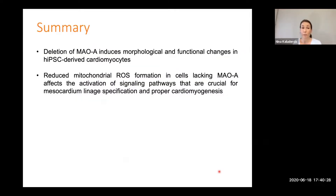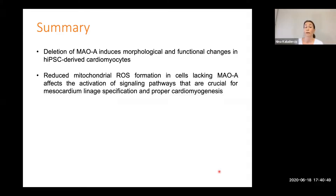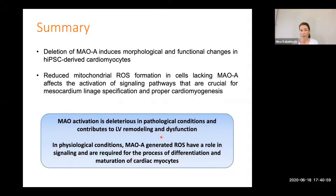In summary, deletion of MAOA induces morphological and functional changes in IPS-derived cardiac myocytes, occurring early during differentiation — between days two and four. It appears that ROS produced by MAO are important for activation of signaling pathways crucial for lineage specification and cardiomyogenesis. The overall take-home message is that while in pathological conditions MAO activity is deleterious and contributes to cardiac dysfunction, it still has a signaling role in physiological conditions and is required for the process of cardiomyocyte differentiation.